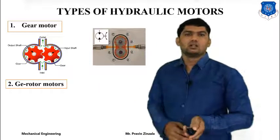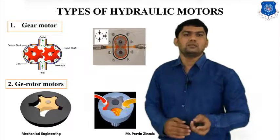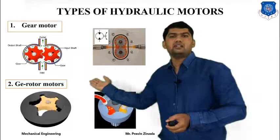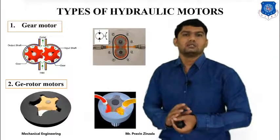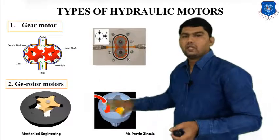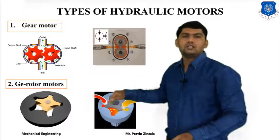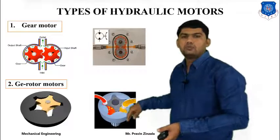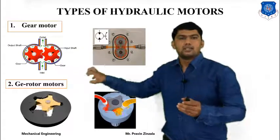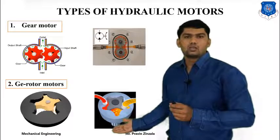The second type is the G-rotor motor, also similar to the G-rotor hydraulic pump in construction but opposite in function. In the G-rotor, the main difference between the external and internal gear is one tooth — there is one tooth difference between the external and internal gear. Whenever we supply pressurized hydraulic fluid to the G-rotor motor, it starts rotating and fluid exits at the outlet, converting hydraulic energy into mechanical energy and providing rotary motion at the shaft.